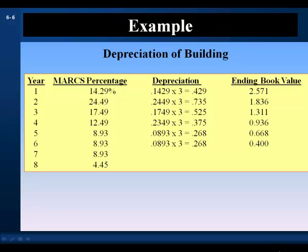Next, we go to our depreciation schedule and determine the yearly depreciation expense for the building, as well as its book value at the end of year six, which we'll need to calculate the capital gain on salvage. For year one, the depreciation percentage is 14.29%. Multiplying by the initial cost of $3 million gives depreciation expense of $429,000 in year one. The ending book value at the end of year one is $3 million minus $429,000, or $2.571 million.